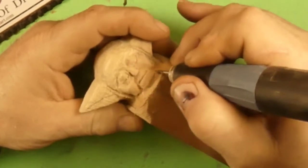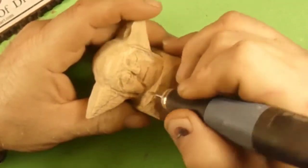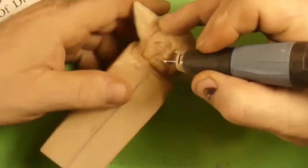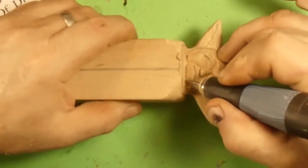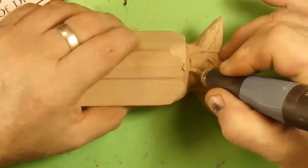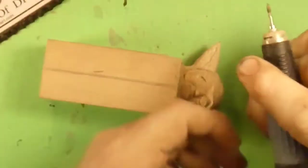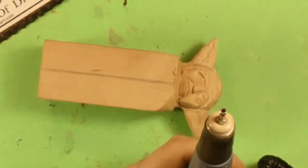You can see we're using this carbide burr to shape under the chin and do some rounding over. Basically just getting everything roughed out like you would with your big cut saw burr.